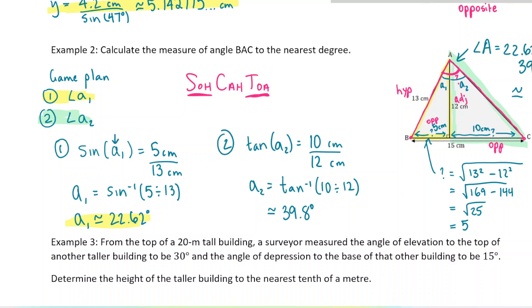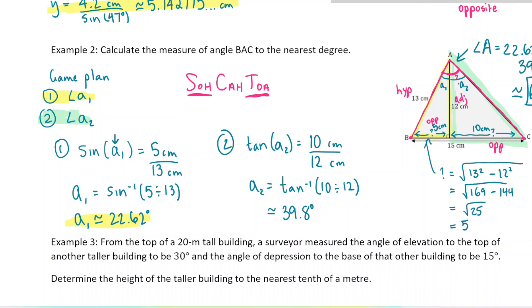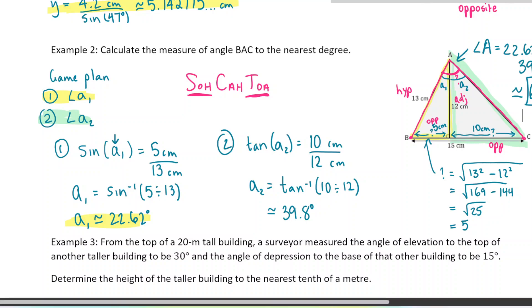Finally, the last step: angle A equals 22.62° plus 39.8°, which is approximately 62.4 degrees. So that's how we find a missing angle when you need multiple steps.